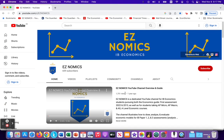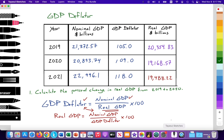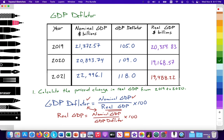Hello, this is Domenico with EZnomics, and we're going to continue practicing with measuring economic output. In the previous video, which will be linked in the top corner, we looked at the use of the GDP deflator to make calculations. We're looking at the U.S. economy over 2019, 2020, and 2021.